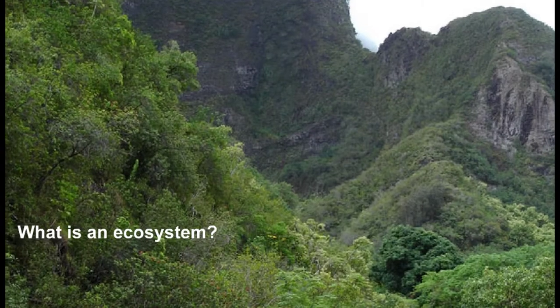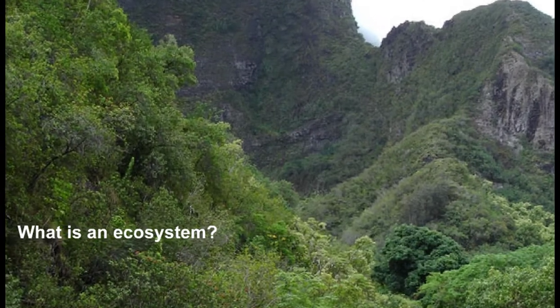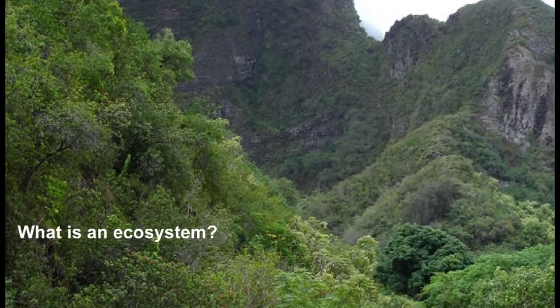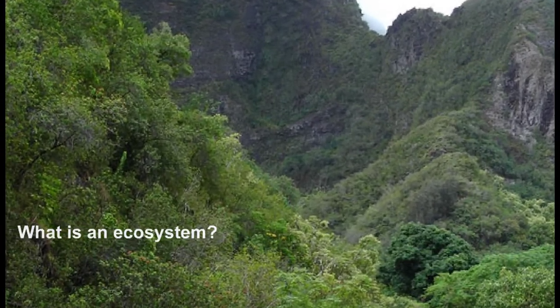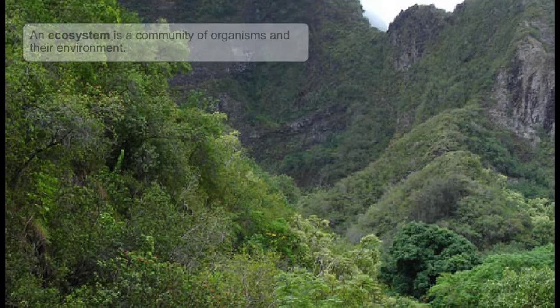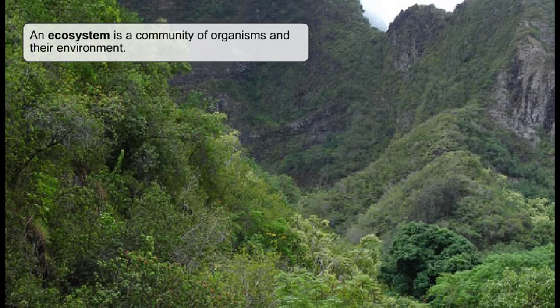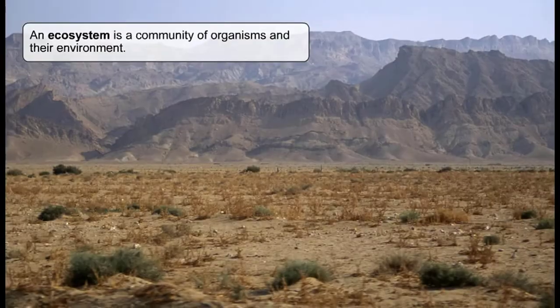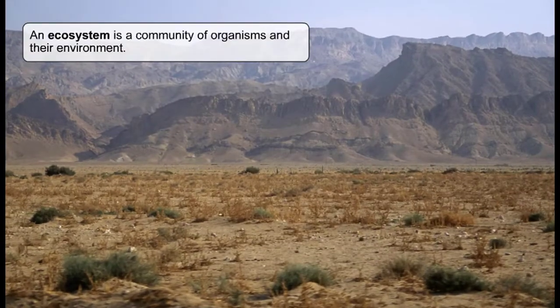Now that we understand what a community is, what is an ecosystem? An ecosystem is a community of organisms and their environment.